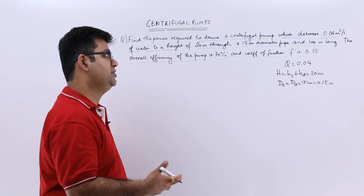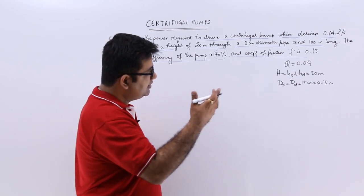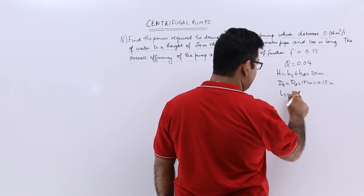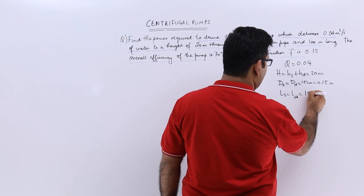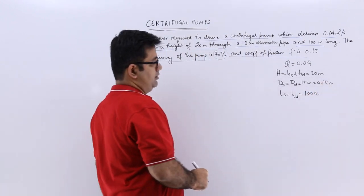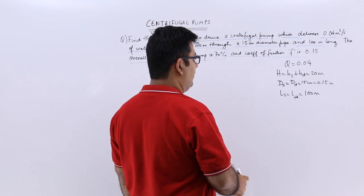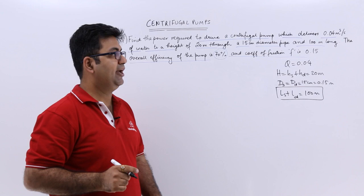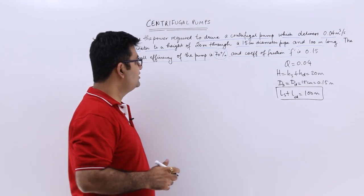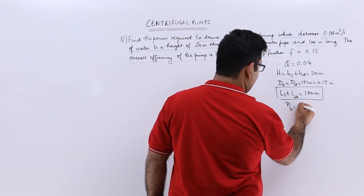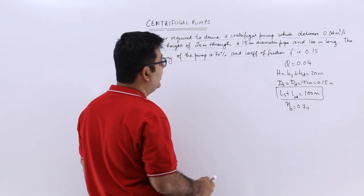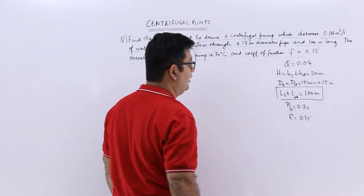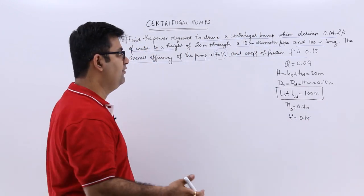This means the velocity in the suction pipe and the delivery pipe will also be the same. The total length is 100 meters. The overall efficiency eta_O is 0.7 and the coefficient of friction is 0.15.